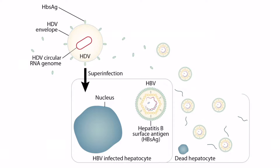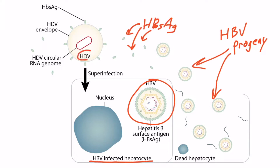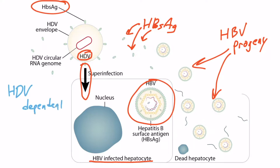This is discussed in detail in the hepatitis D lecture. Briefly, hepatitis B infects a liver hepatocyte and releases progeny with its hepatitis B surface antigen. These antigens then allow hepatitis D to enter the hepatocyte. However, if hepatitis D came along without those surface antigens, it wouldn't be able to enter and infect the hepatocyte. Therefore, hepatitis D is dependent on hepatitis B.